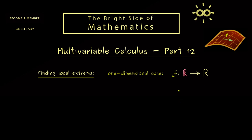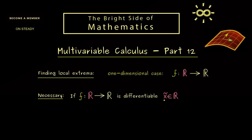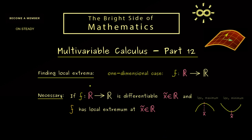Therefore let's first look at a function from R into R. There we already know if we have enough differentiability we have necessary conditions and sufficient conditions for finding local extrema. Let's first recall the necessary condition: if the function f is differentiable at a given point x̃ and has a local maximum or minimum there, then the graph locally looks like a peak or a valley, and it's necessary that the derivative at this point vanishes.